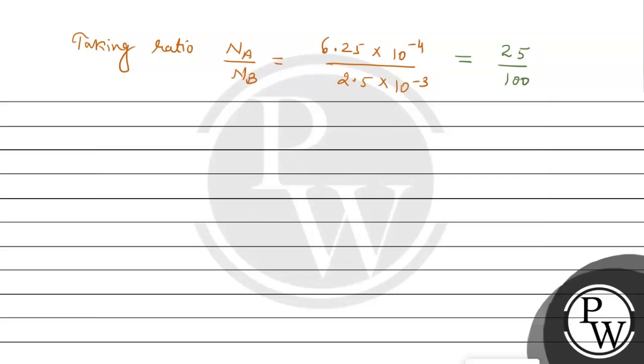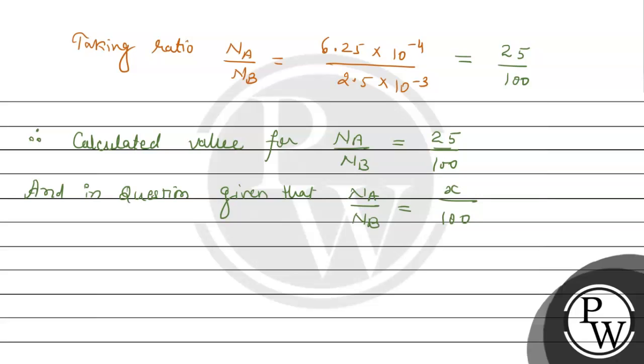This is the calculated value. Therefore, calculated value for N_A by N_B is equals to 25 by 100. And in the question, given that N_A by N_B is equals to x upon 100. Therefore, comparing above expressions, we have x is equals to 25.